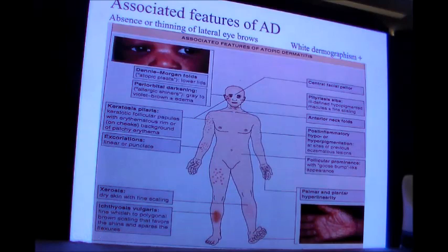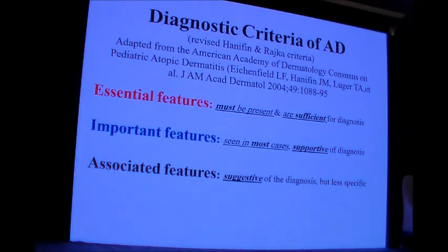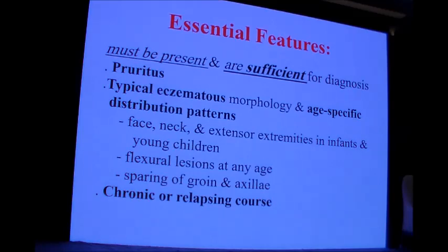The diagnostic criteria of atopic dermatitis are the revised criteria of Hanifin and Rajka. Atopic dermatitis is characterized by essential features — which must be present and alone are sufficient to diagnose it — important features seen in most cases that support the diagnosis, and associated features that are suggestive but less specific. The essential features include pruritus, the typical eczematous morphology with age-specific distribution patterns, and a chronic or relapsing course.